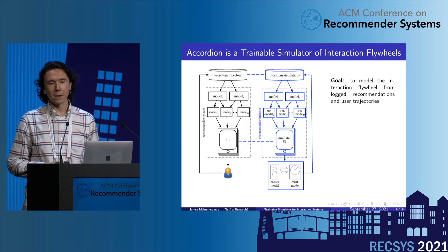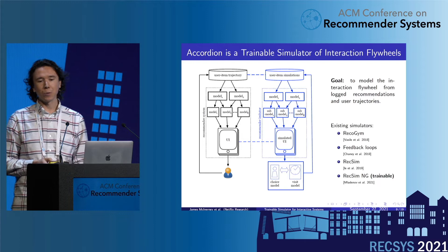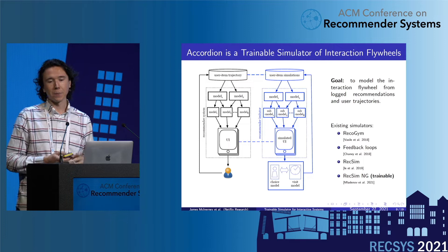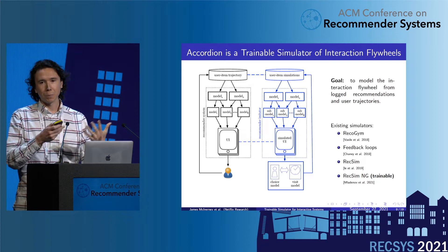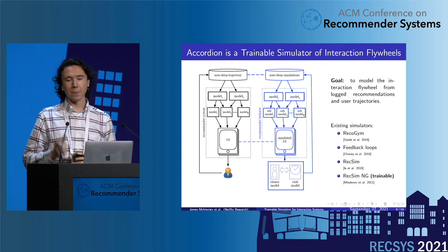With that in mind, we propose Accordion as a trainable simulator of interaction flywheels. There are several existing simulators, and all of them — with the exception of RecSim and RecNG — are based on synthetic assumptions and treat the problem as a Markovian or MDP dynamic process. Our point of departure is that we work in continuous time and directly address the number of visits as a function of user satisfaction.